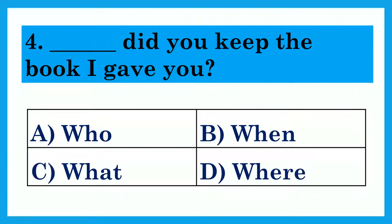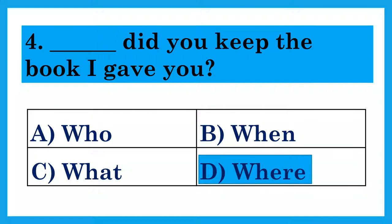Dash did you keep the book I gave you? Option A: Who? Option B: When? Option C: What? Option D: Where? The answer is Option D: Where — Where did you keep the book I gave you?